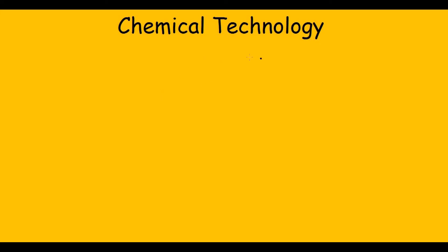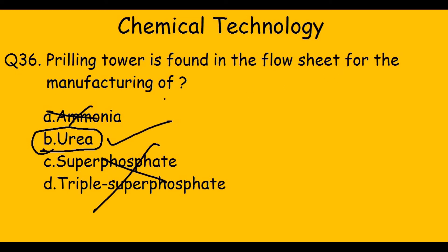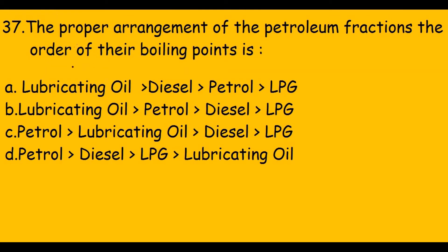Welcome to the fourth video where I solve chemical process technology questions from GATE. This question asks that the prilling tower is found in the flow sheet for the manufacturing of — the answer is directly urea. The prilling tower is found in the flow sheet of urea.